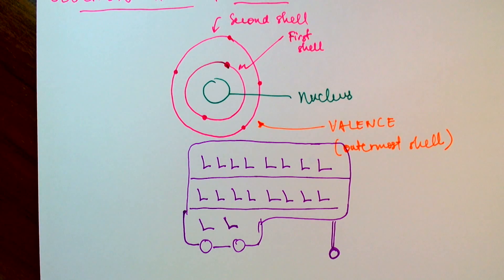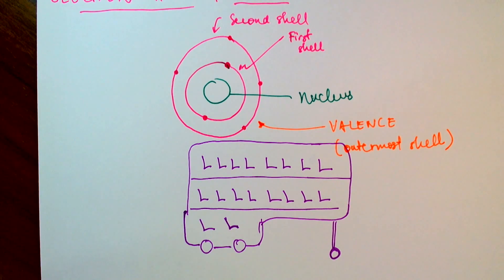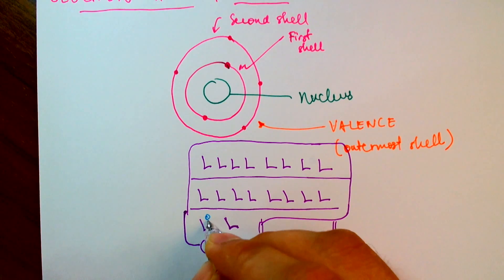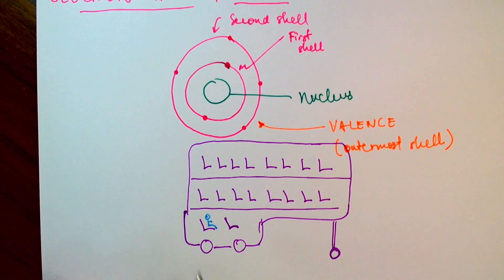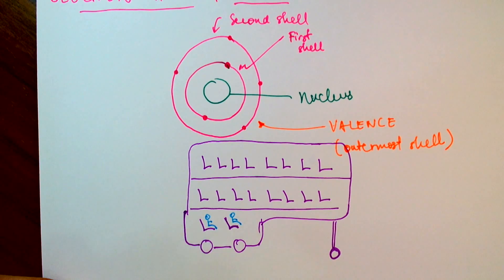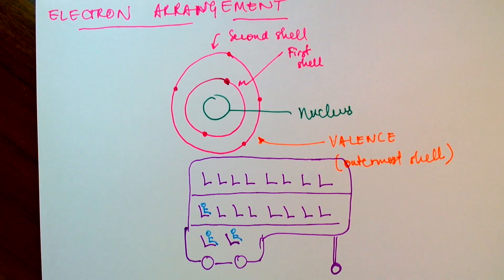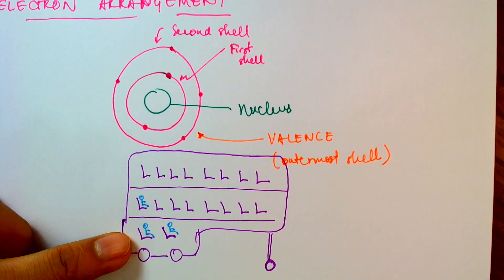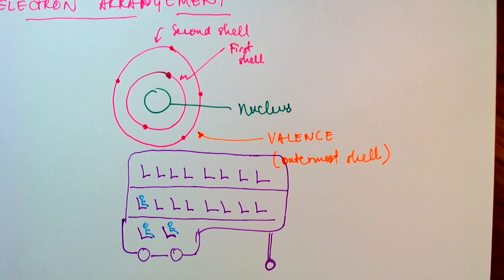The conductor of this bus is very particular — he won't let passengers go to the next level until the level below it has been filled. So if one person comes in, he sits on the first level. The next person wants to go upstairs, but the conductor says no. Once both seats at the bottom level are filled, the third person can move on to the next shell. The passengers are the electrons, and the seats are the available spots in the shell.